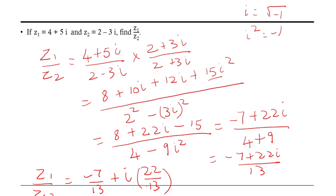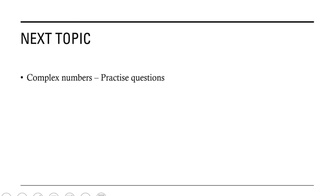We should always express any complex number in the form a plus ib. So we have the answer z1 by z2 equals minus 7 by 13 plus i into 22 by 13. I hope this video was useful to you and the topics discussed are clear. In my next video I will be discussing some practice questions in complex numbers. Thank you for watching.